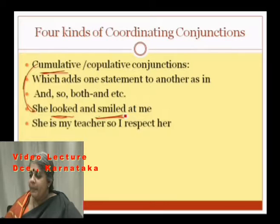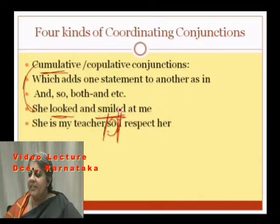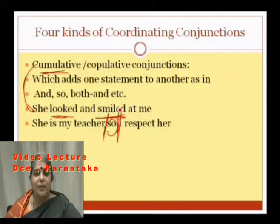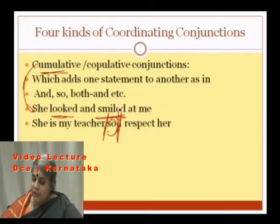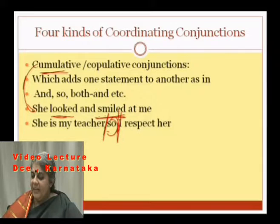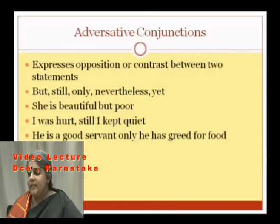'She is my teacher, so I respect her.' 'She is my teacher' is sentence one; 'I respect her' is sentence two. The first statement is already given, and the second adds to it. So 'so' attaches extra information to the previous statement. That is why this conjunction is called copulative or cumulative. The second kind is adversative conjunction.